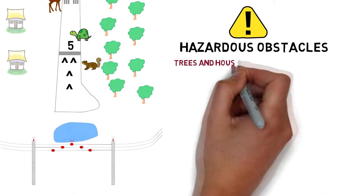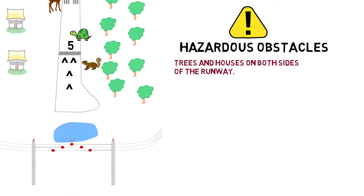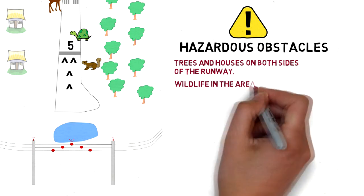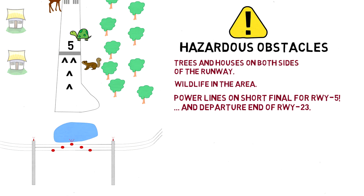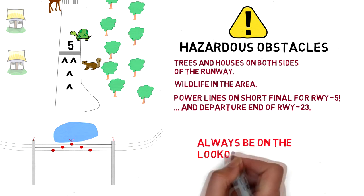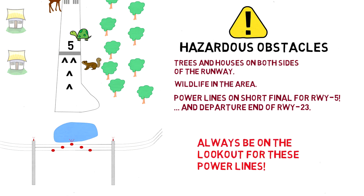So to quickly recap, there are trees and houses on both sides of the runway, wildlife is also in the area, the power lines are on short final for runway 5 and the departure end of 23. And always be on the lookout for these power lines.